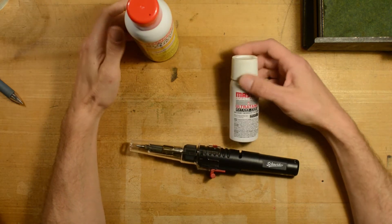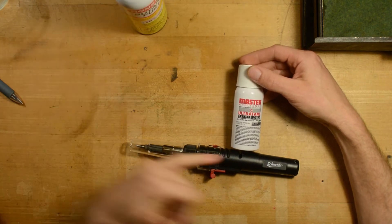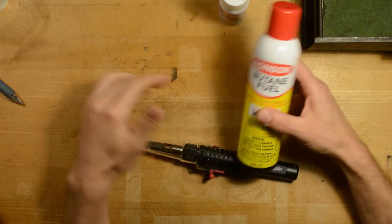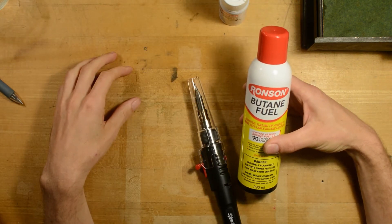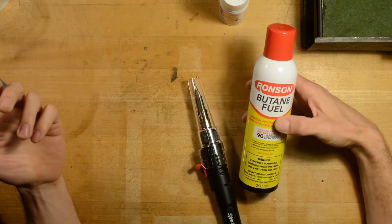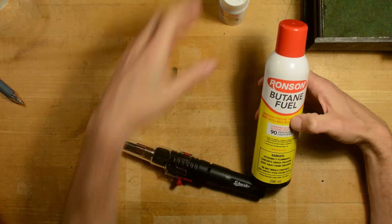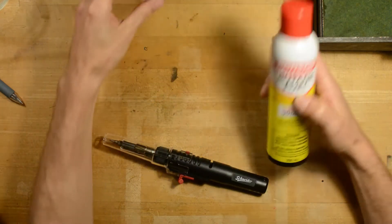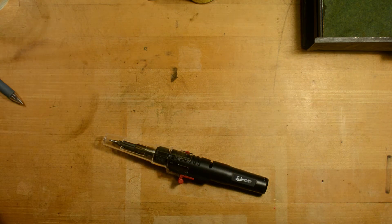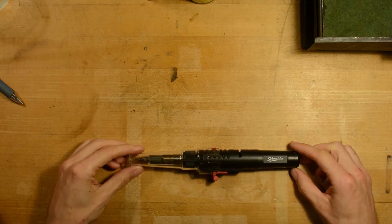So this Master Appliance ultra butane fuel is non-clogging, however something like this Ronson might not be as non-clogging as this other one. Just keep that in mind when buying butane fuel - if you can find something that's non-clogging, you might as well go for it.